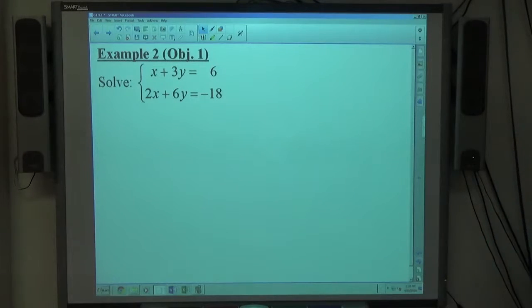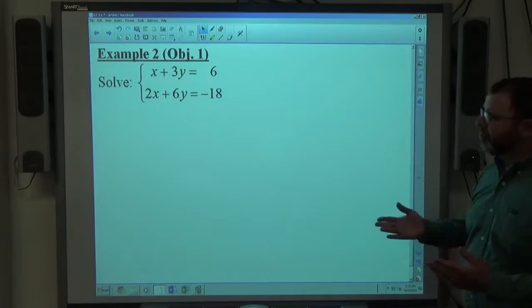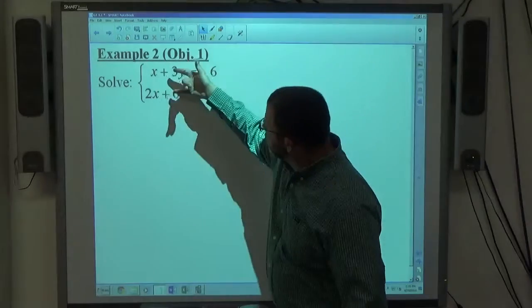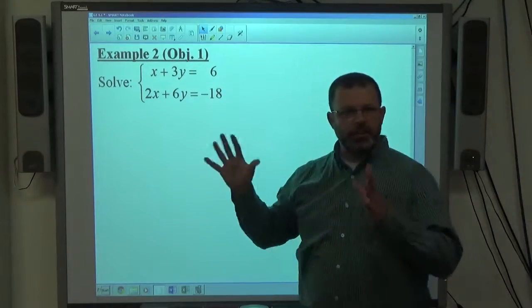Example 2, solve x plus 3y equals 6 and 2x plus 6y equals negative 18. The structure this time we have x's and y's equal to numbers. Everything is the same structure.